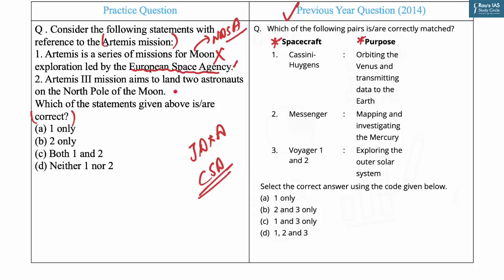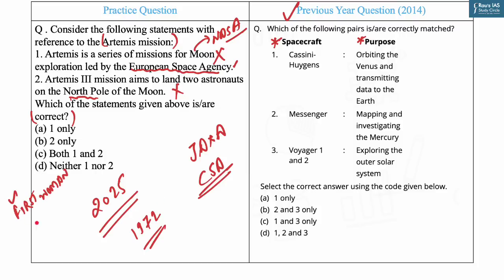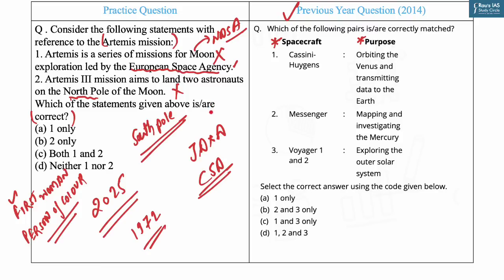Statement two says Artemis 3 mission aims to land two astronauts on the north pole of the moon — this is also incorrect. Artemis 3 is a crewed mission expected to launch by 2025 and aims to land humans on the moon's south pole, a region previously unvisited by humans. It will be the first human landing since Apollo in 1972 and will land the first woman and first person of color on the moon. Since both statements are incorrect, the answer is option D — neither one nor two.